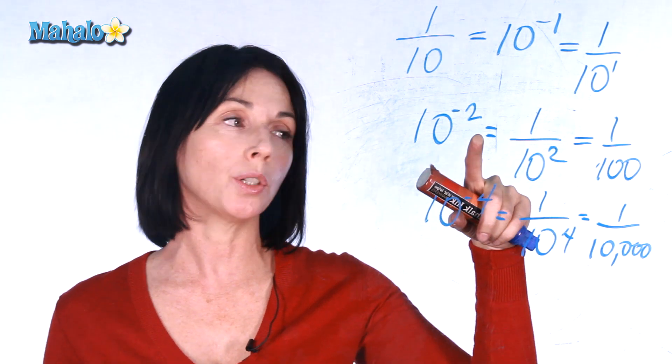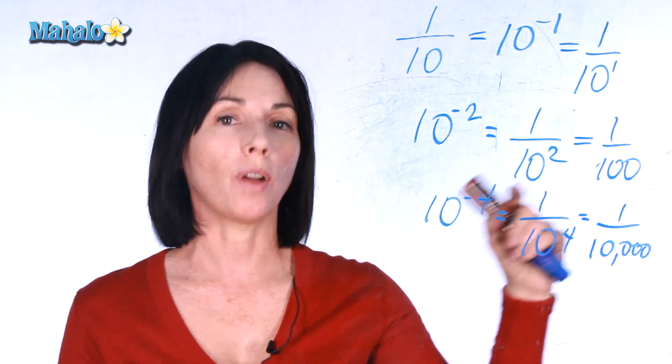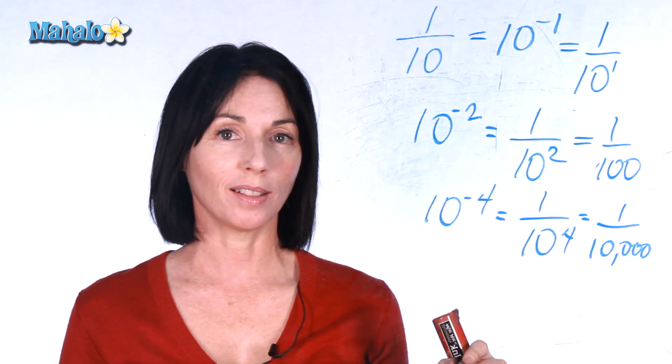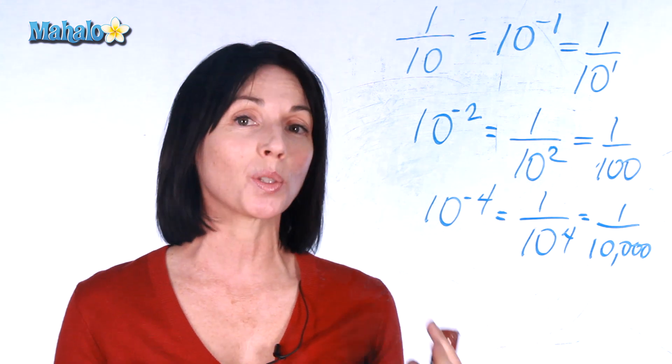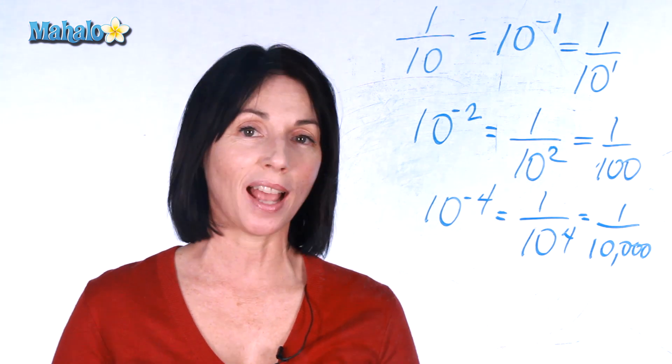10 to the power of negative 2, you're actually dividing by 100. And that's how negative exponents work with powers of 10.